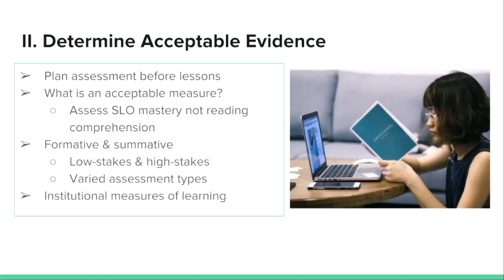Think about varied assessment types: objective, matching, drag and drop, short answer, fill in the blank — there are lots of ways. Oral, written, listening quizzes, and so forth. Your institution might also have specific measures to consider for acceptable evidence, such as state standards, Common Core, or benchmarks specific to your department. Think about all of that as you consider your acceptable evidence.